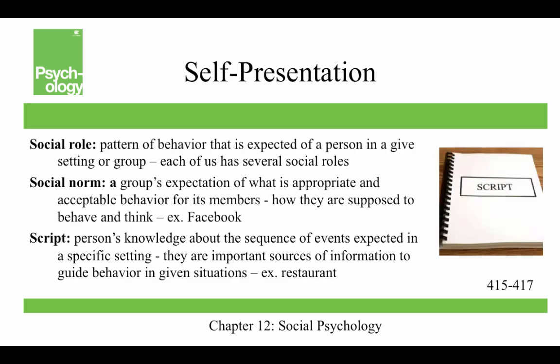Self-presentation is one major social determinant of behavior — our social roles. This is a pattern of behavior that's expected of a person in a given setting or group, and each of us has several social roles. A social norm is a group's expectation of what is appropriate and acceptable behavior for its members — how they're supposed to behave and think. For example, what's an appropriate versus an inappropriate post on Facebook? I still don't know if you can tag people in pictures or not.